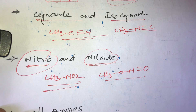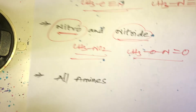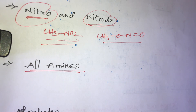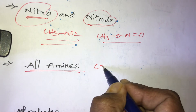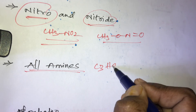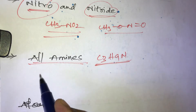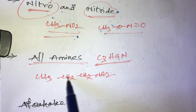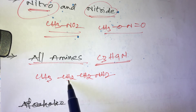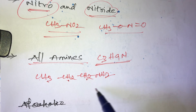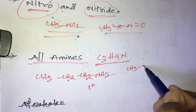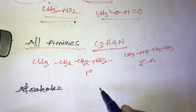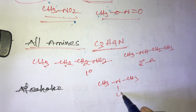All amines also belong to functional isomers — primary amine, secondary amine, and tertiary amine. The molecular formula is C3H9N. A primary amine example: CH3CH2CH2NH2, which has three carbons, nine hydrogens, and one nitrogen. A secondary amine example: CH3NHCH2CH3.